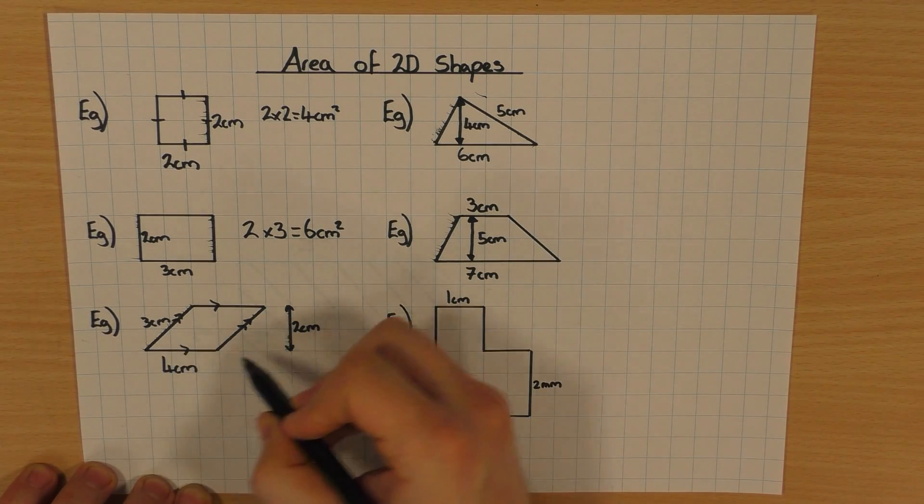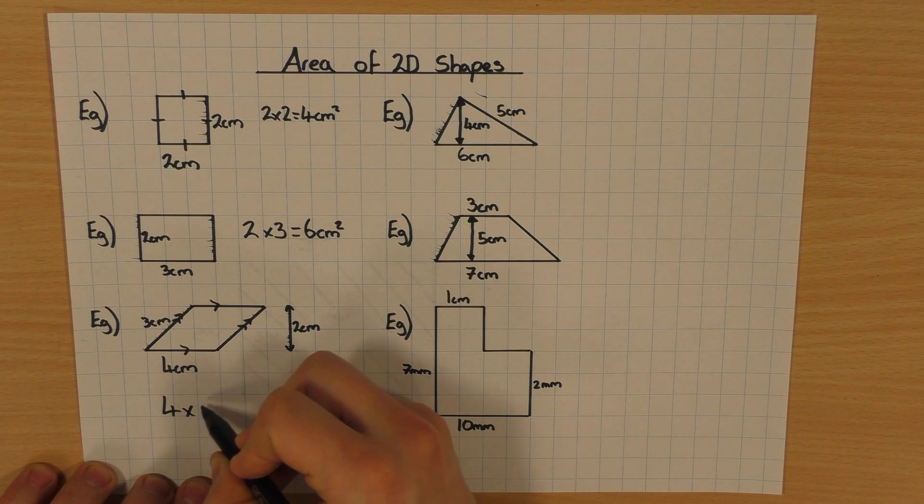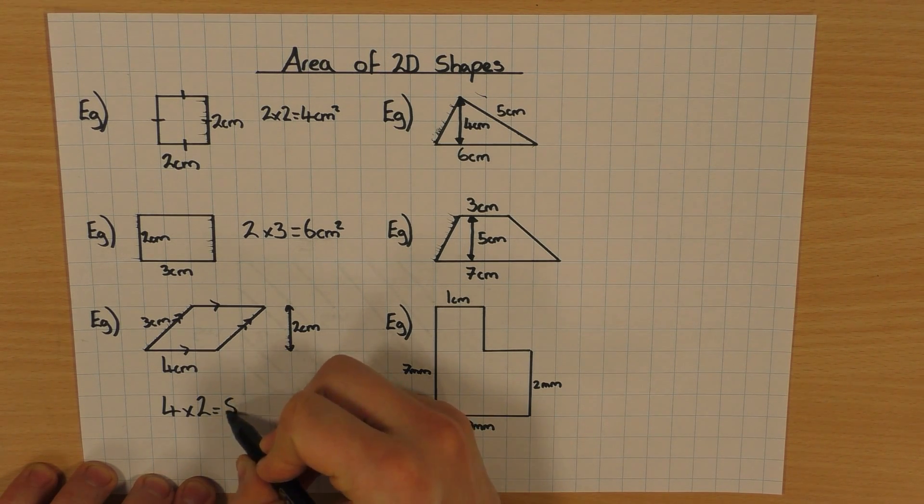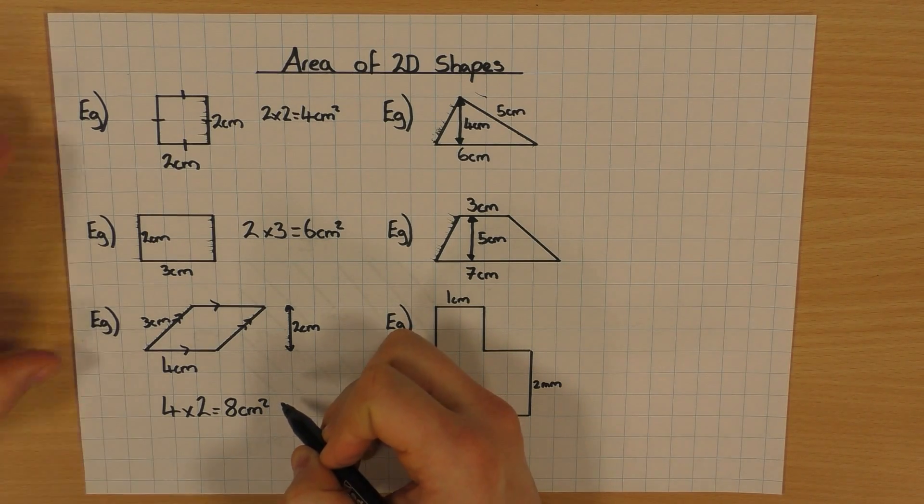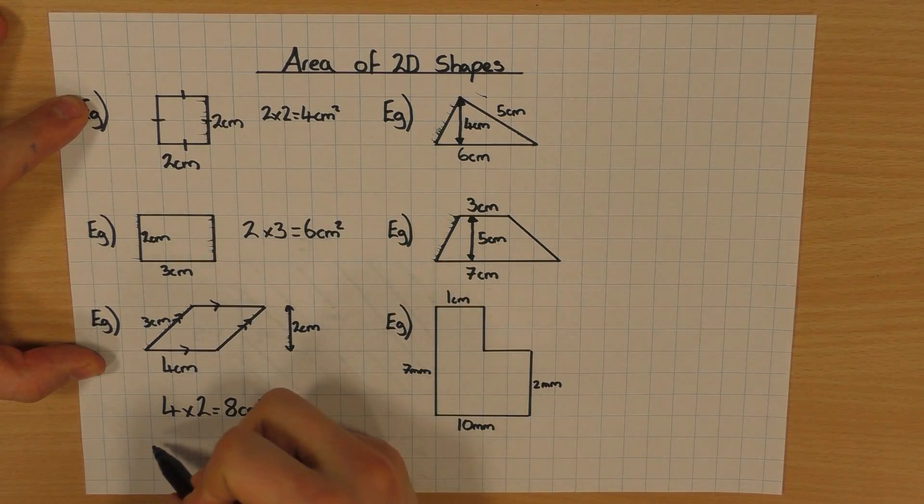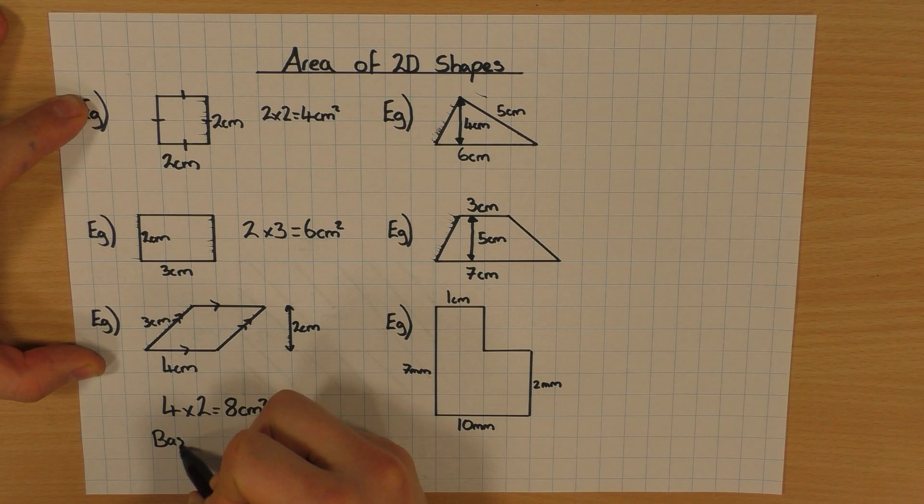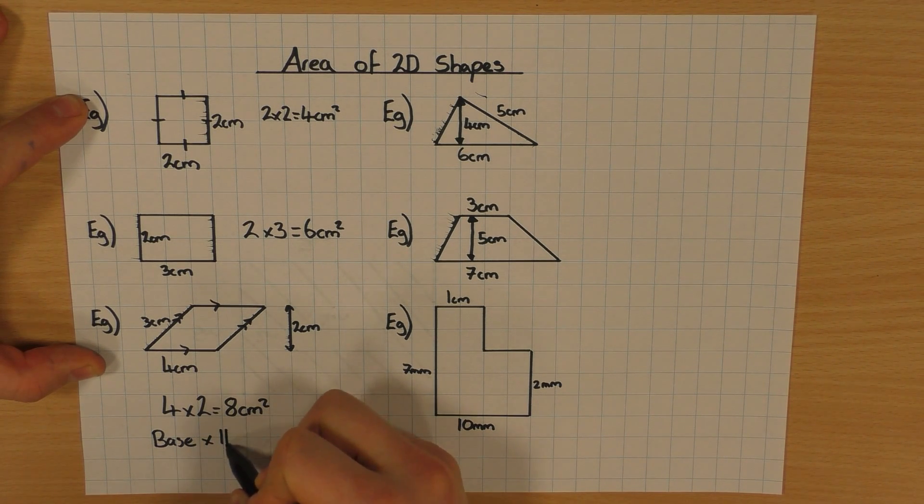So 4 times by 2 is obviously 8. And again, don't forget your units, cm². So all of these three have the same formula. Base times by the height.